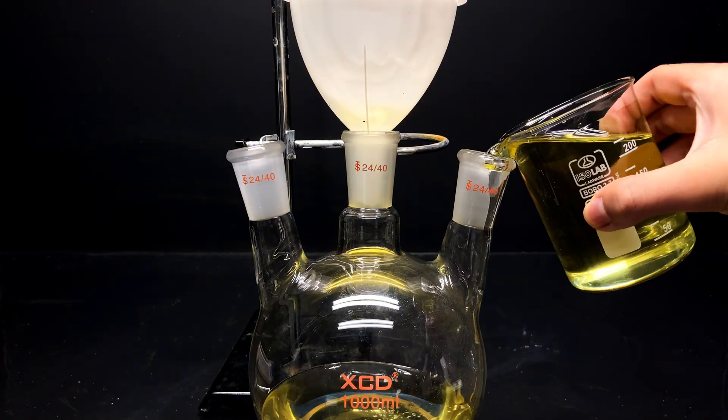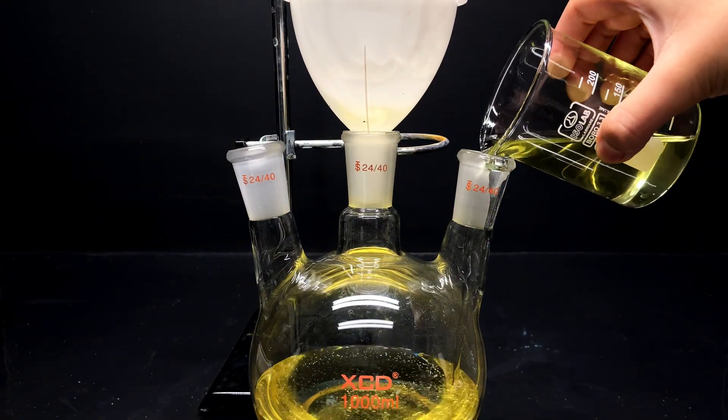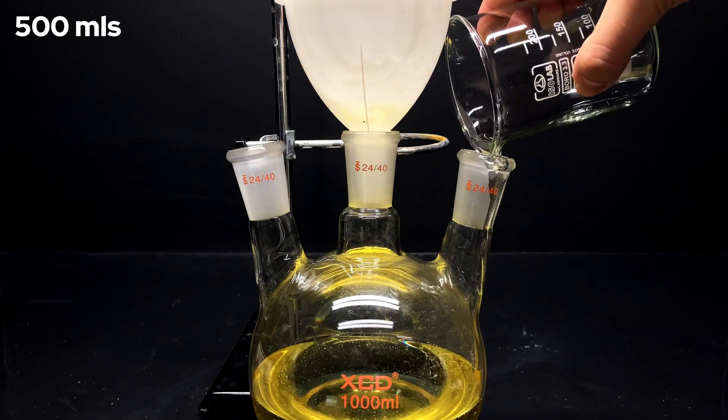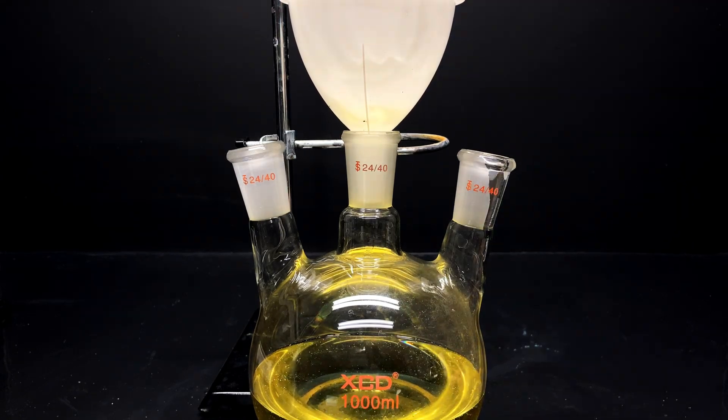You can then pour this through another filter. Now you have your vegetable oil cleaned. Finally, for the reaction, you can pour 500 mils of it into a big 1 liter round bottom flask. Let's move on to the next step.